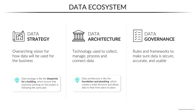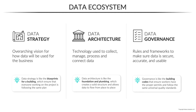Then you've got data governance, which are the rules and frameworks that make sure the data is secure, accurate, and usable. This might include things like user roles and permissions, change logs, quality assurance and version control, data dictionaries and catalogs, usage guidelines, etc. Going back to our conversation about data democratization, having a strong governance plan in place is absolutely critical if you intend to make your data broadly accessible. Think of governance like the building codes, which exist to ensure that workers have the proper permits and all follow the same universal quality standards.